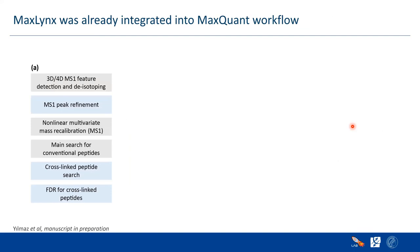MaxLinx is already integrated into the workflow. The basic workflow includes 3D or 4D MS1 feature detection — things already existing in gray, with new additions for cross-linking shown in blue. The 4D refers to the ion mobility dimension available on timsTOF instruments. After peak refinement, we do the conventional search, then start the cross-link peptide search and FDR calculation.